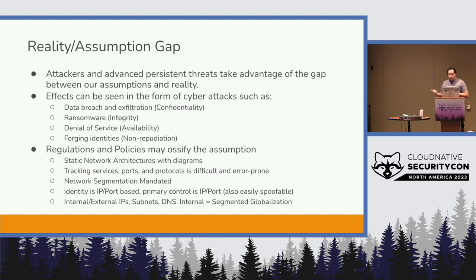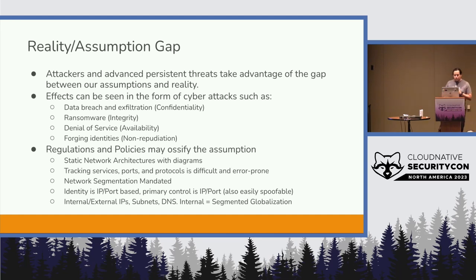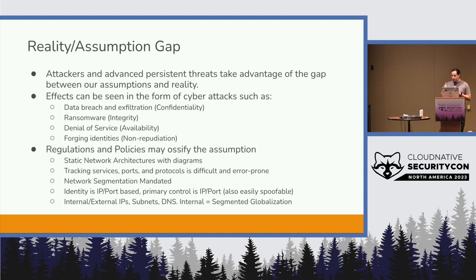A couple examples of things we used to do in the past: we used to have static network architectures, assumed they didn't move. We put in various diagrams and assumed that's exactly what it looks like. We would track our services and ports using IP address and ports rather than a different type of identity. Things like network segmentation were mandated across certain boundaries, but once you're inside, those boundaries don't protect you anymore because the attacker has access to your sensitive systems.